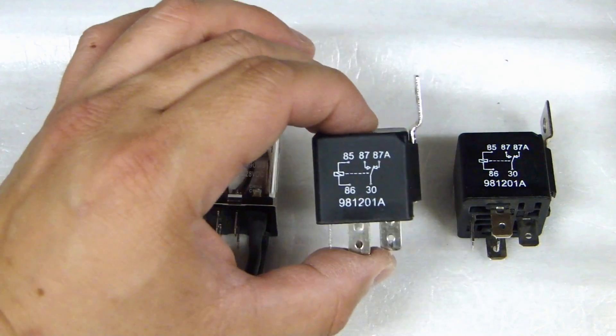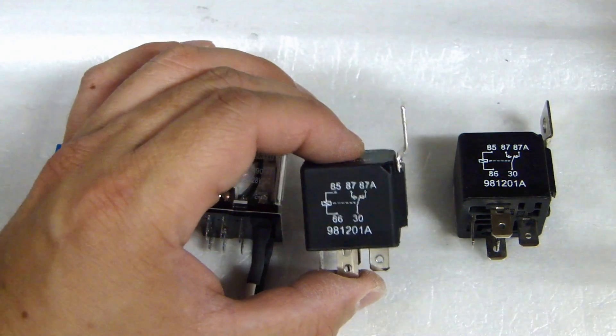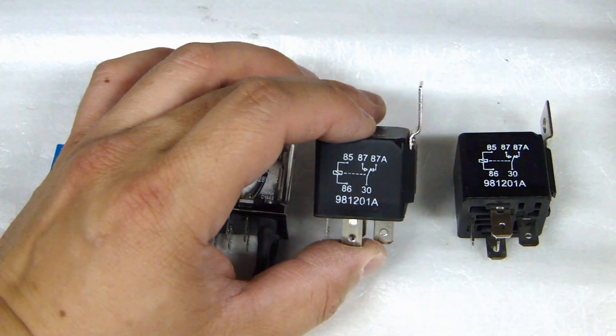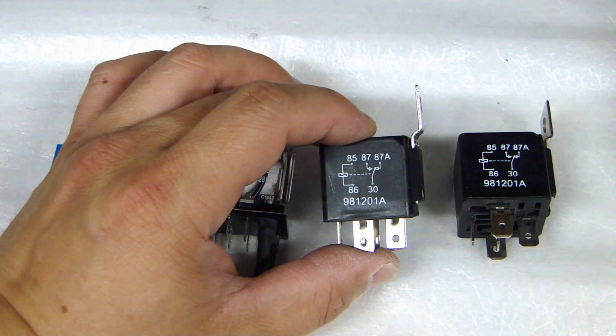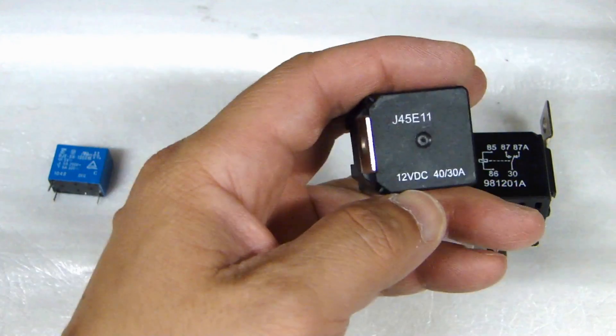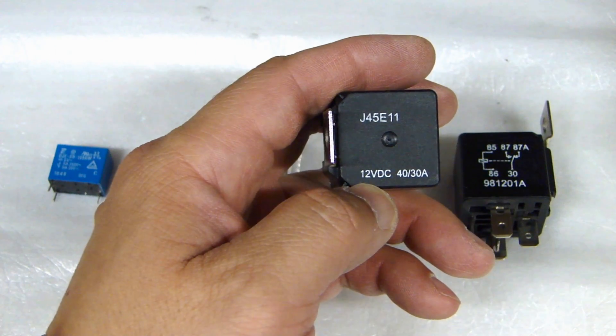These two on the right are commonly used in automotive installs. These are 12 volt relays and the coil inside this relay requires 12 volt to energize and they'll open and close the switch. In fact if you look at the top here it tells you right here this is a 12 volt DC relay.